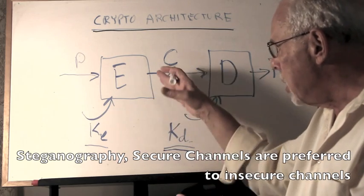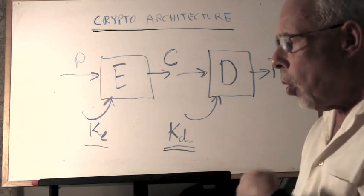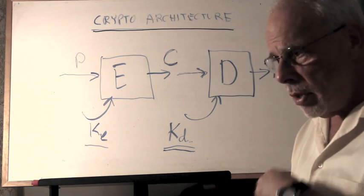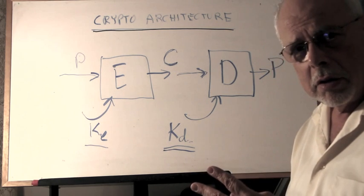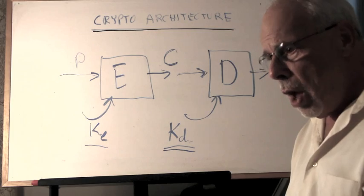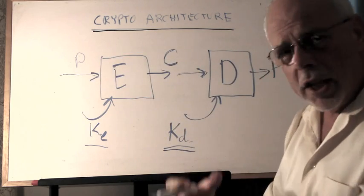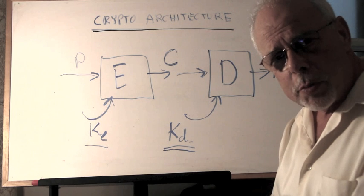And only if we don't have a secure channel, we go to this insecure channel and then we need the one trick that all cryptography is using. We never invented any other. You protect the secret by rewriting it from P to C, changing the language in which the secret is expressed.